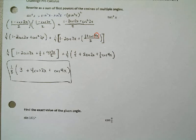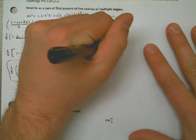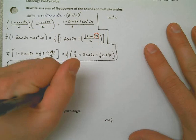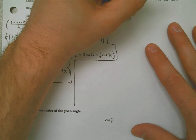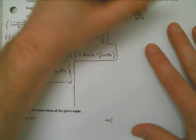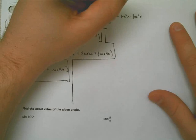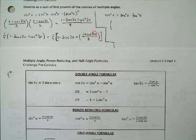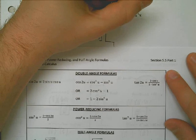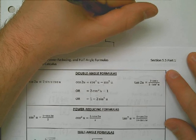Alright, so I look at this as tangent to the fourth, same exact first step. The first thing that I'm going to do is instead of writing it as tangent to the fourth, I'm going to write it as tangent squared times tangent squared. Because now when I do that, when I write it as tangent squared times tangent squared, I can write this now using the power reducing formula of 1 minus cosine of 2x over 1 plus the cosine of 2x times itself.